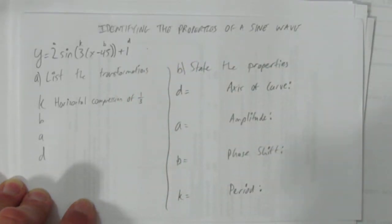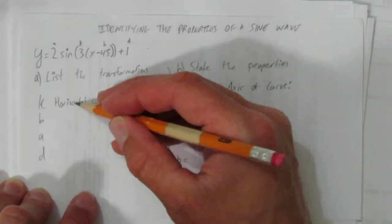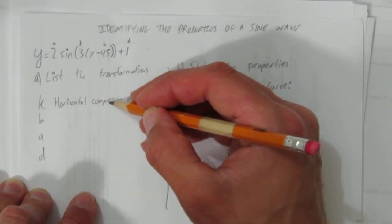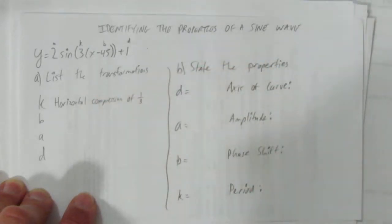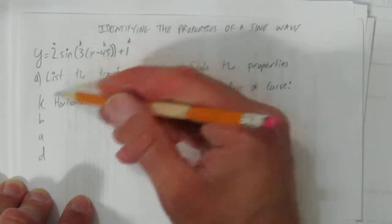But since it's divided by 3, we write compression of 1 third. And with me, I'm always looking for three pieces: the number, the direction, and the type. It's a compression of 1 third horizontally. You could write it any way as long as you say the three things. And we start with the k value.